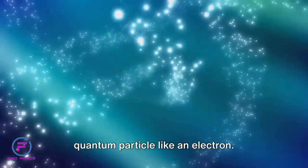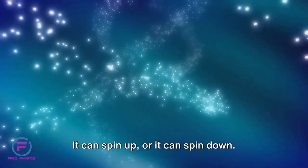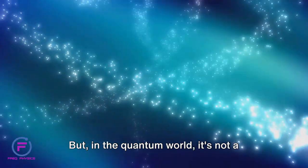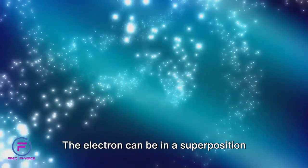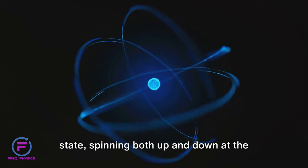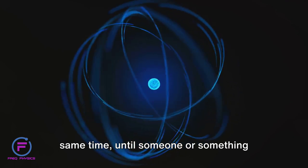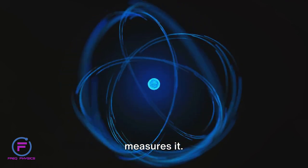Well, consider a quantum particle like an electron. It can spin up or it can spin down. But in the quantum world, it's not a simple either-or situation. The electron can be in a superposition state, spinning both up and down at the same time, until someone or something measures it.